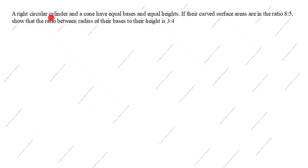Hi friends, welcome to my channel Excellent Ideas in Education. Today we are going to solve this surface areas and volume problem. This is a very important problem. A right circular cylinder and the cone have equal bases and equal heights. If the curved surface areas are in the ratio 8 is to 5, what is given in this question?